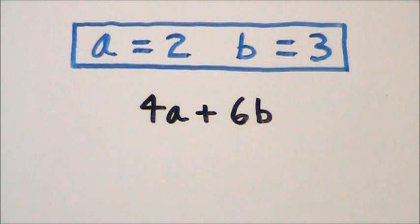Our problem is 4a plus 6b. What we have to do is replace the variables a and b with the numbers that they represent.